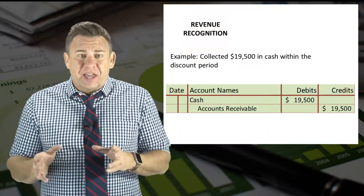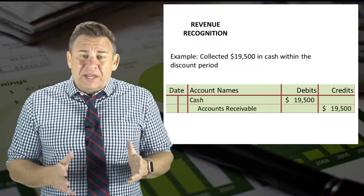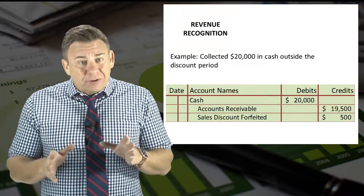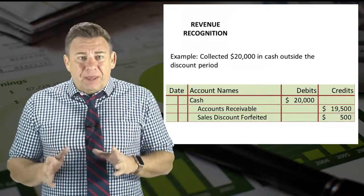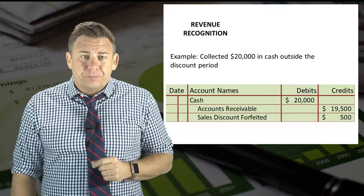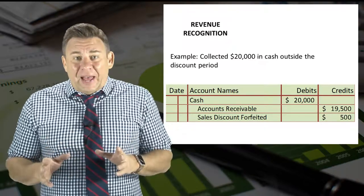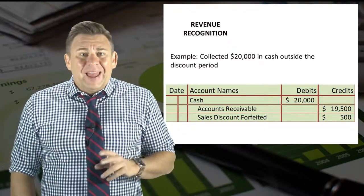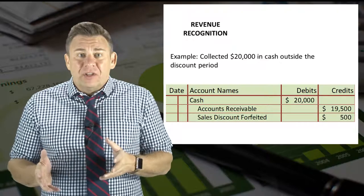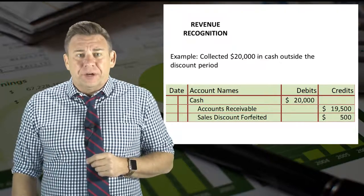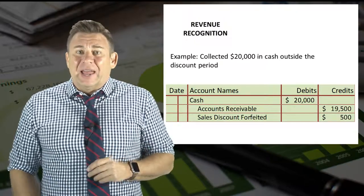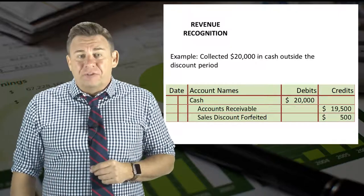When a customer pays us within the discount period, we would debit cash and credit accounts receivable for $19,500. However, if the customer does not pay us within the discount period, we would expect full payment of $20,000. In this example, we would debit cash for $20,000 and credit accounts receivable for $19,500, which is the amount this account was debited for in the original entry. At this point, our journal entry is out of balance, so we would also credit an account like sales discount forfeited for $500.